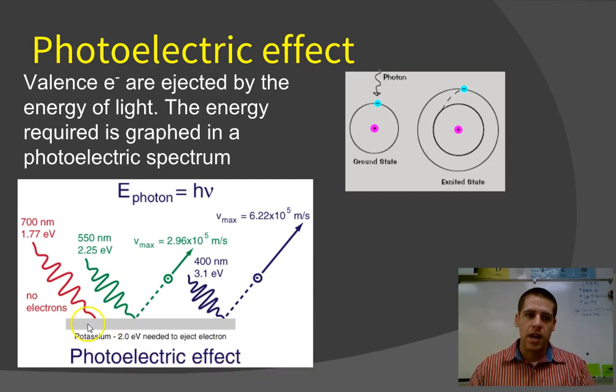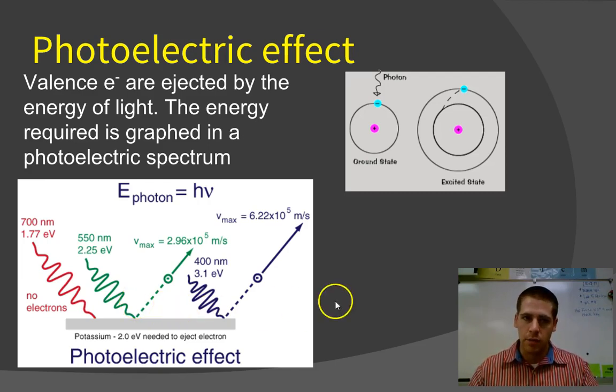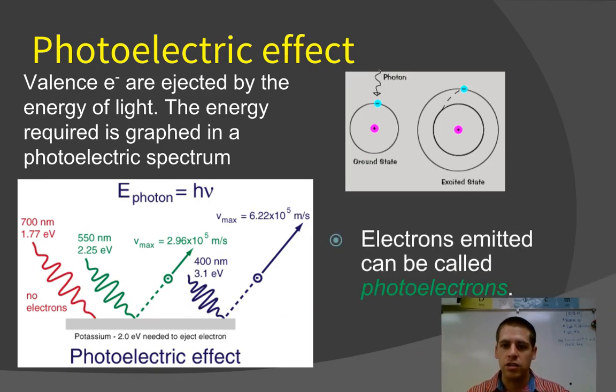And this is called the photoelectric effect. It was discovered by Einstein. Notice on this red light, it's not enough energy to eject, so we don't get any electrons. We only get electrons when we shine specific wavelengths, because those specific wavelengths have specific energies that are enough to eject electrons from those particular atoms. And these electrons that are ejected are called photoelectrons.